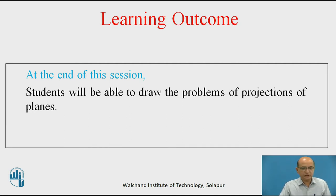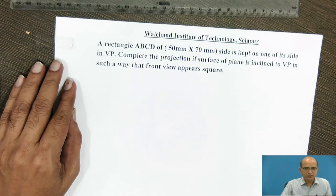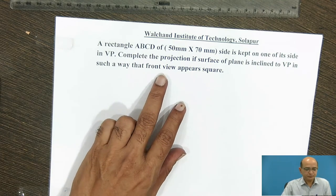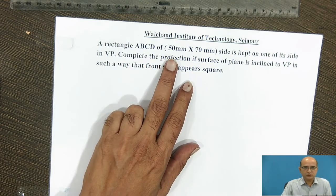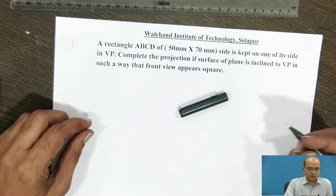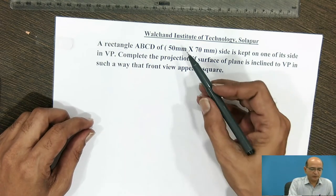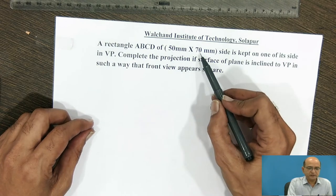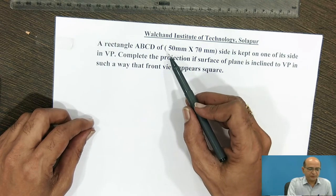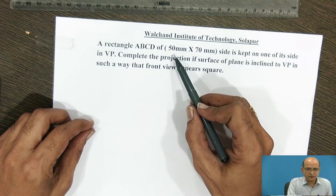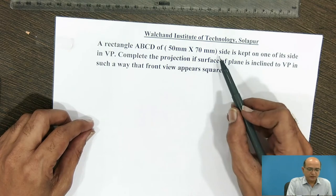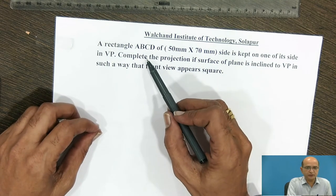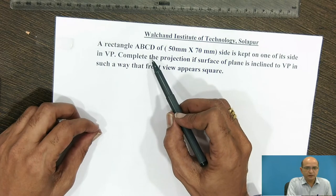We will consider the rectangle ABCD for which the two side dimensions are known to us: 50 mm and 70 mm, where 50 mm is the smaller side and 70 mm is the larger side for this rectangular plane ABCD.